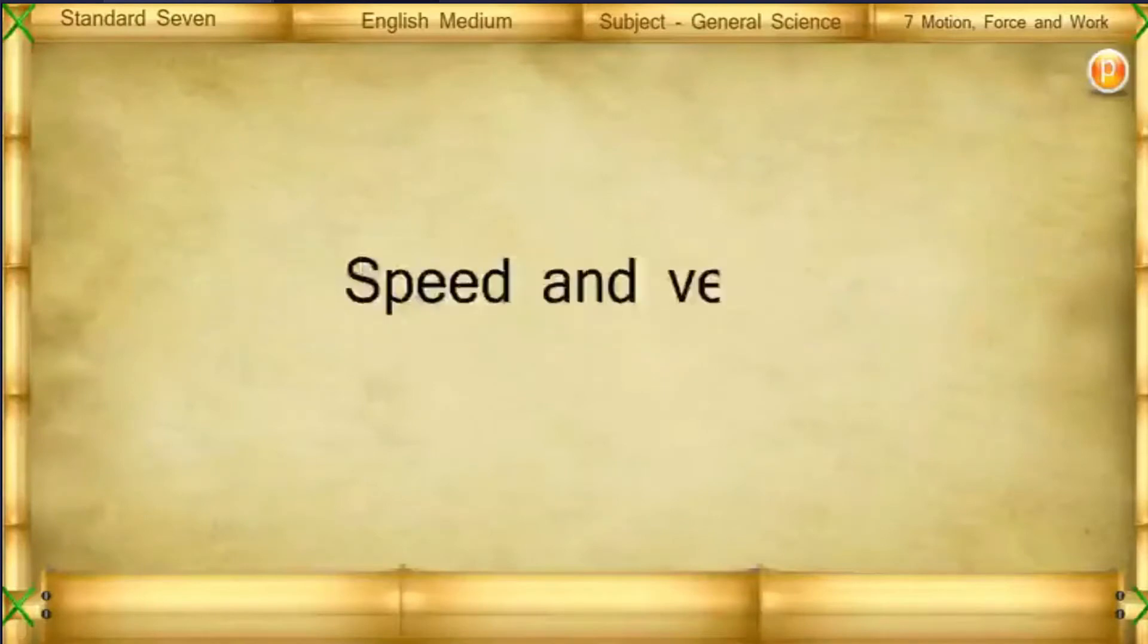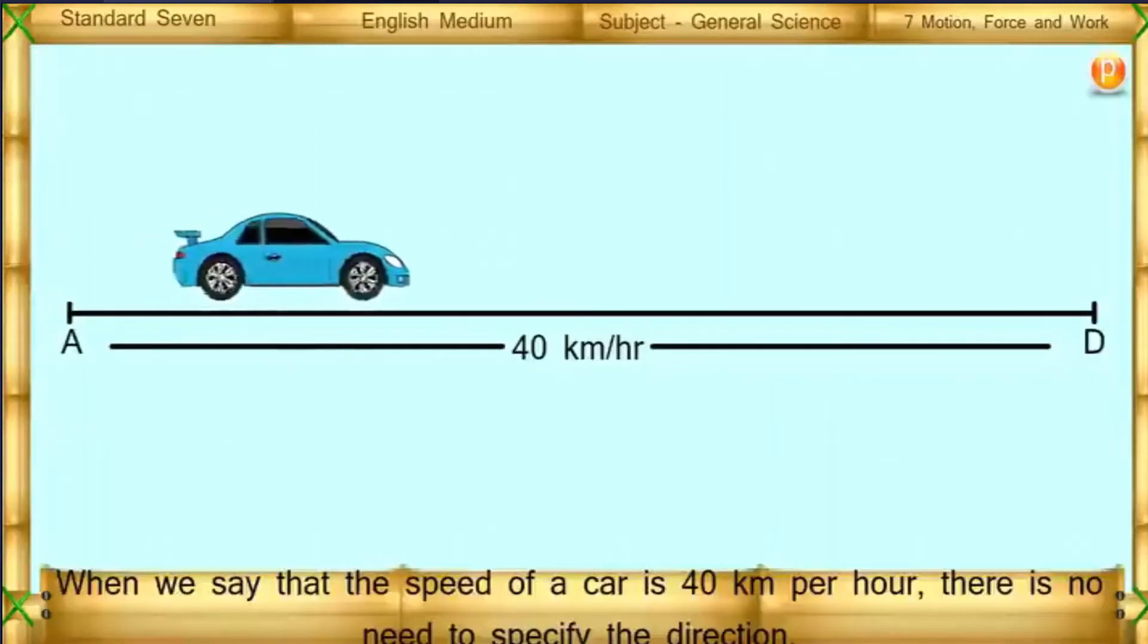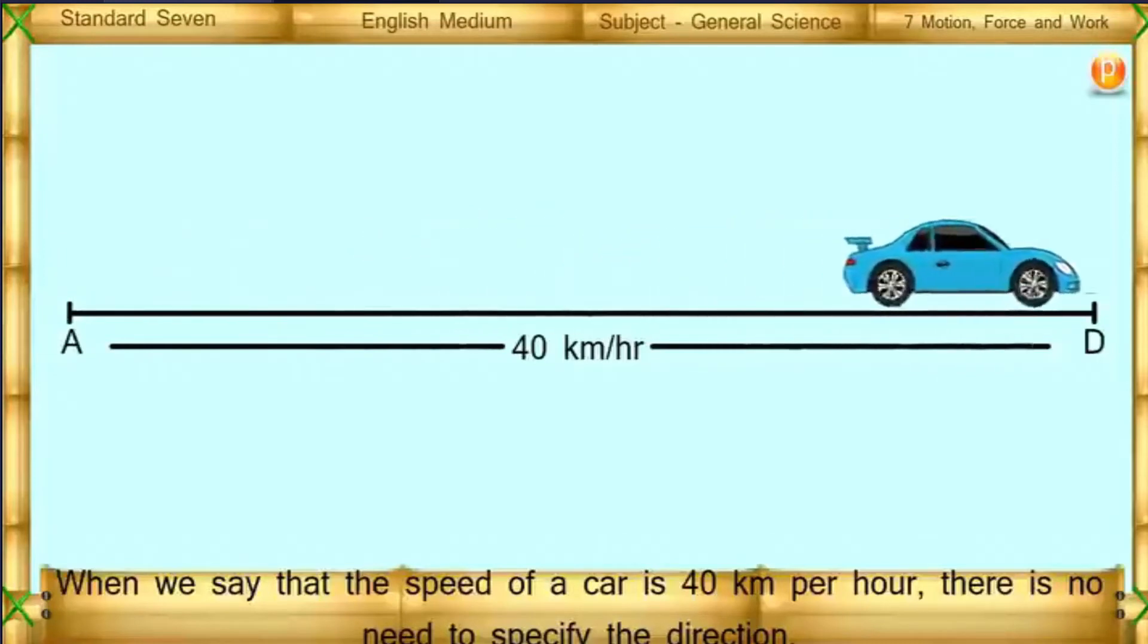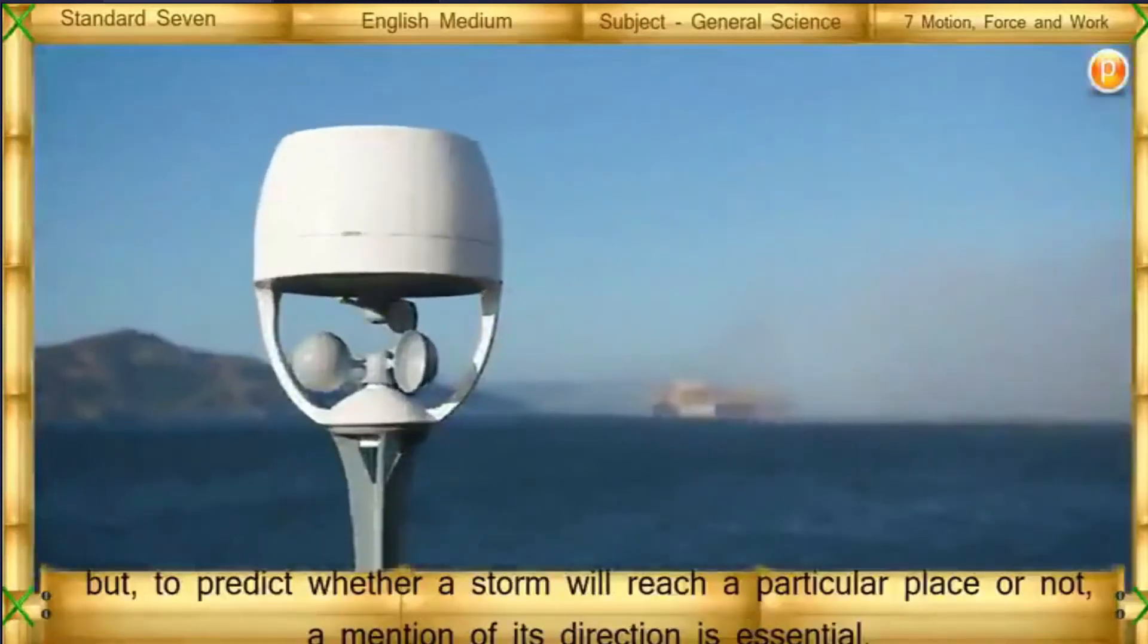Speed and Velocity. When we say that the speed of a car is 40 km per hour, there is no need to specify the direction. But to predict whether a storm will reach a particular place or not, a mention of its direction is essential.